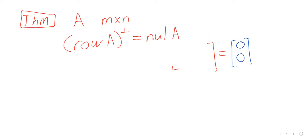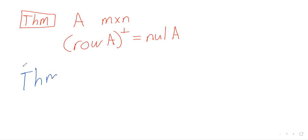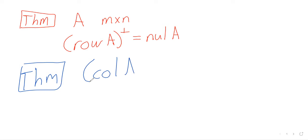Before I explicitly state it, let me state a related theorem. The orthogonal complement of the column space is the null space of the transpose of A. This is just because taking the transpose flips the rows and the columns, so the row space becomes the column space if you take the transpose.